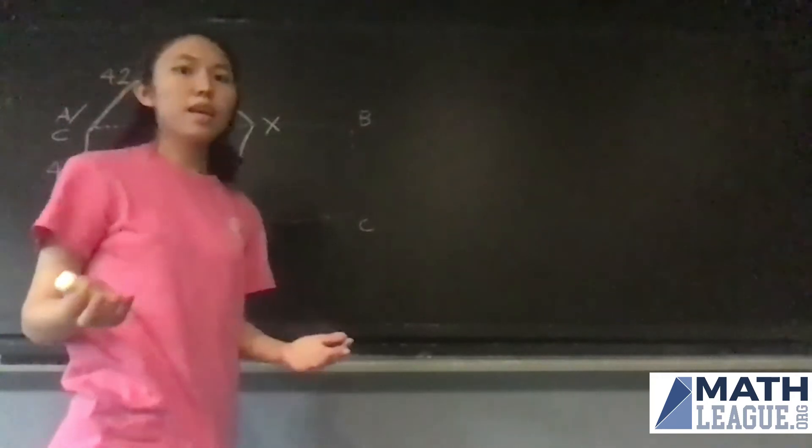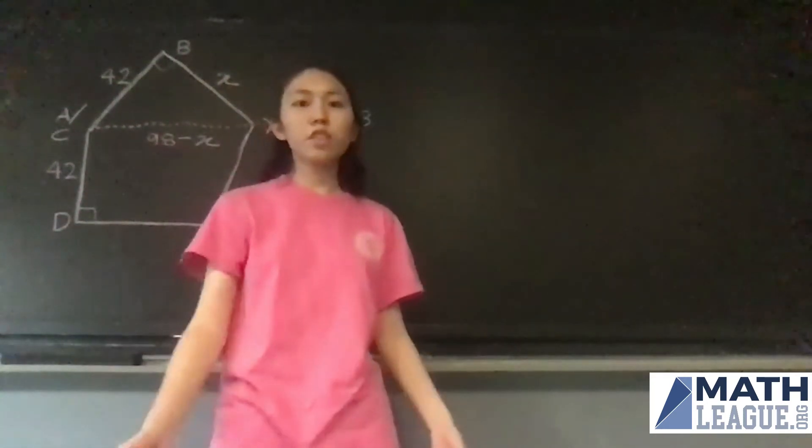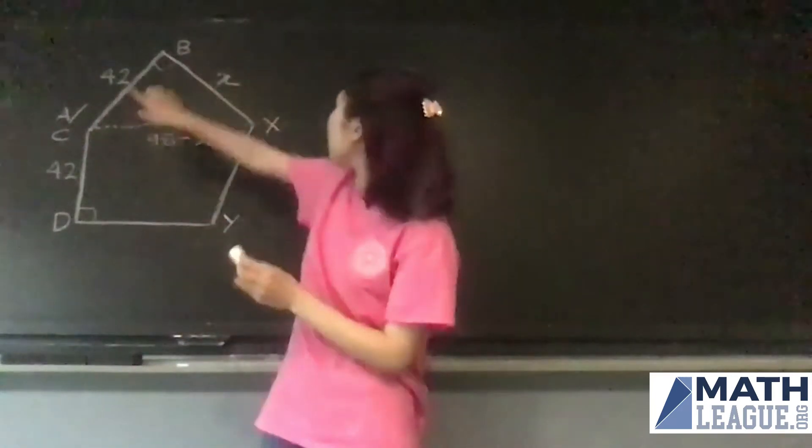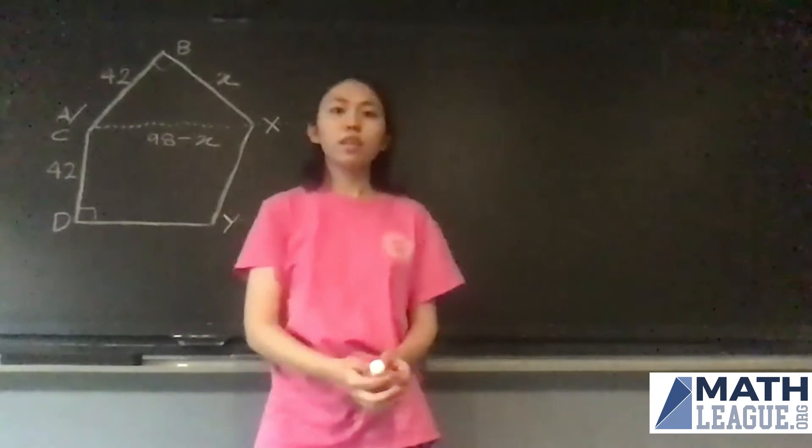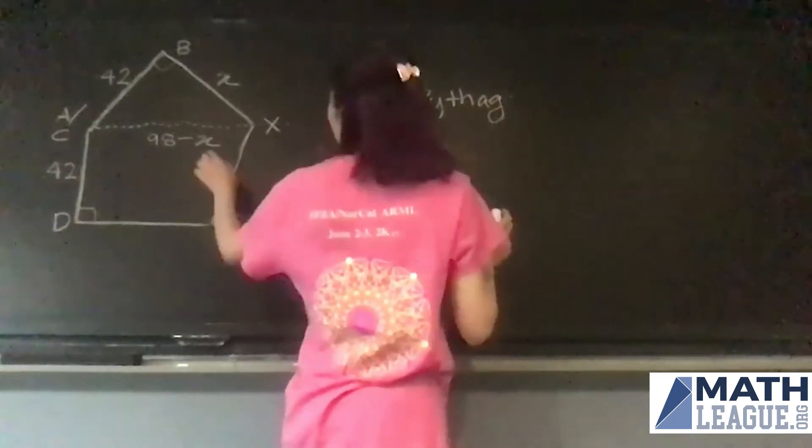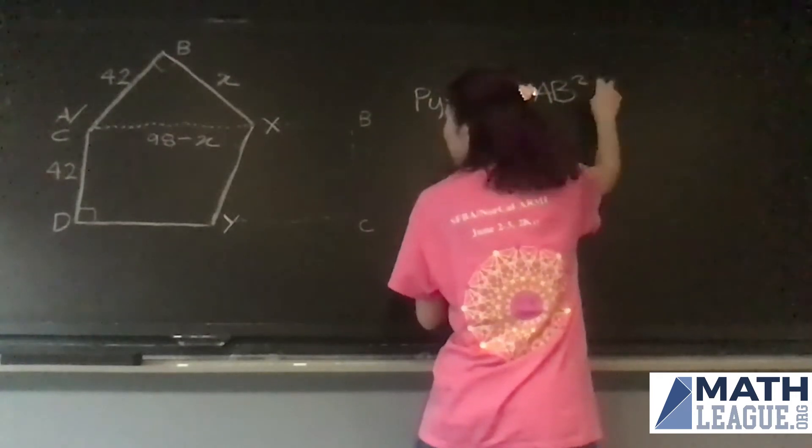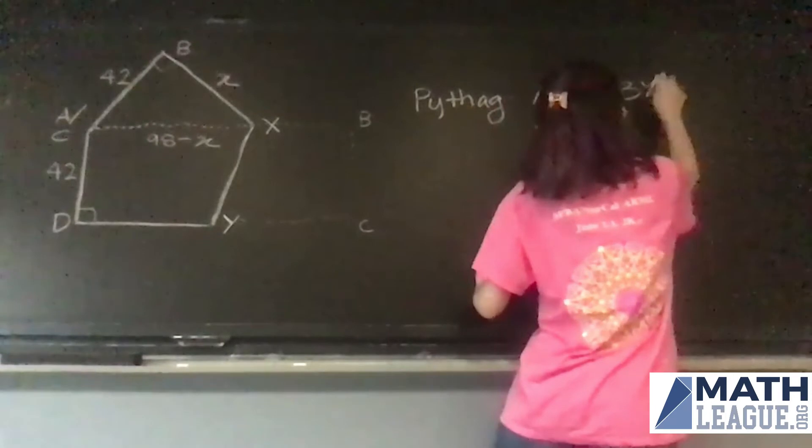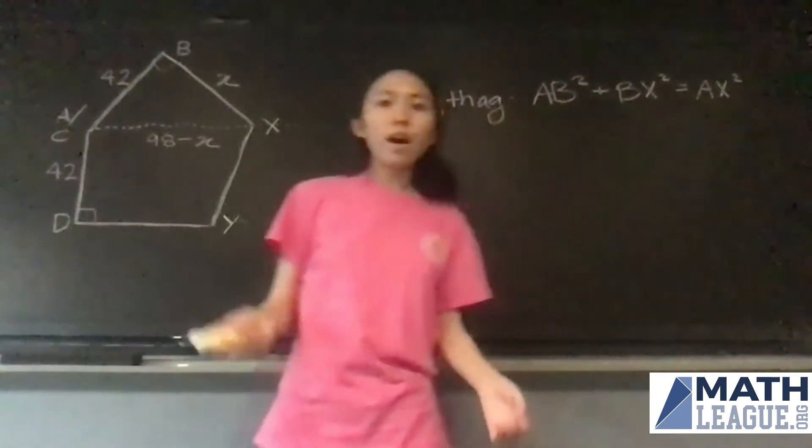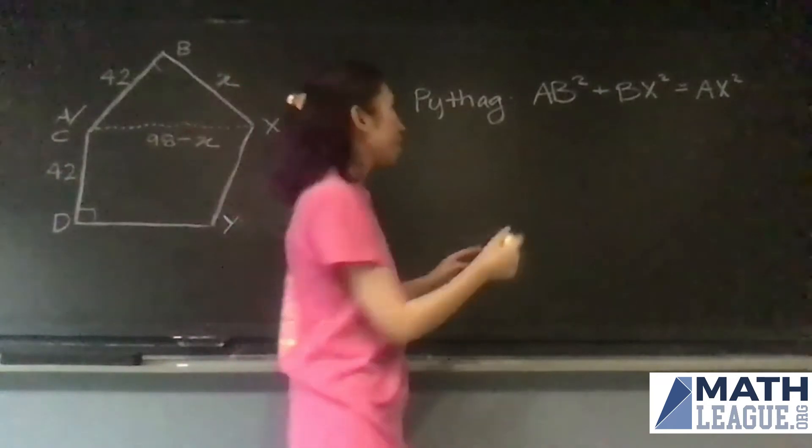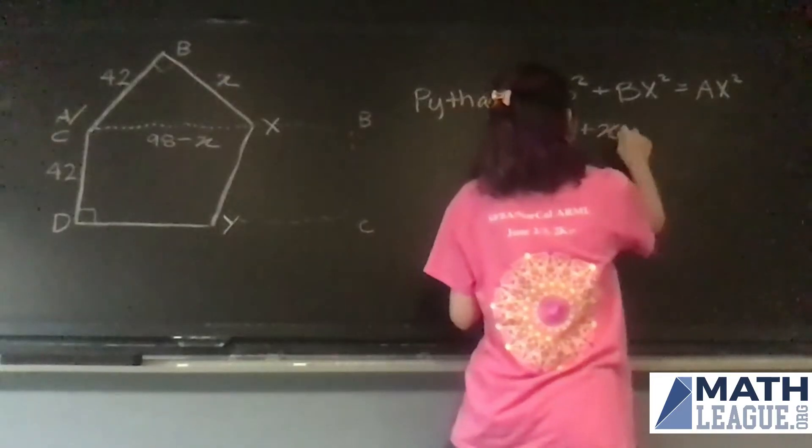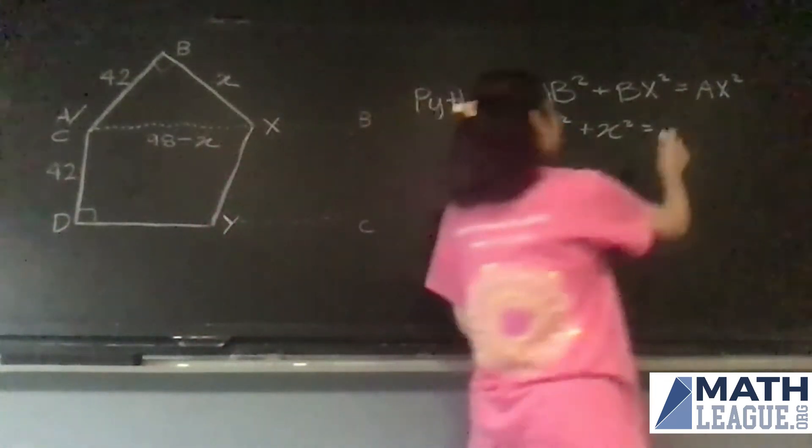So we can recall the Pythagorean theorem, namely that the sum of the squares of the lengths of the two legs is equal to the square of the length of the hypotenuse. So our two legs are AB and BX, and our hypotenuse is AX. So we have that AB squared plus BX squared is equal to AX squared. Now let's substitute in the lengths. So our AB was 42, so that's 42 squared plus X squared is equal to 98 minus X squared.